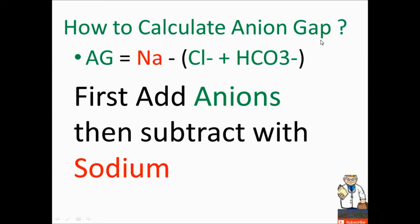So how to calculate anion gap? This is also important — you must know this formula. First, add the anions (negatively charged) together: chloride plus bicarbonate, then subtract from sodium. First add anions, then subtract with sodium, and you will get your anion gap.